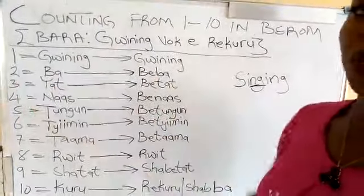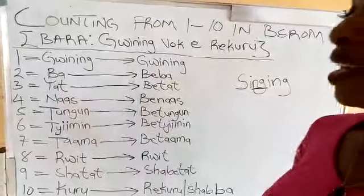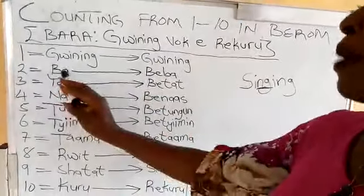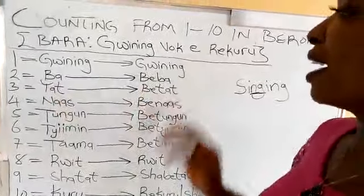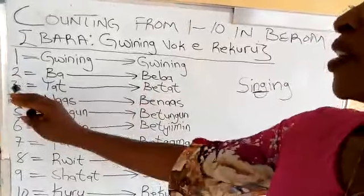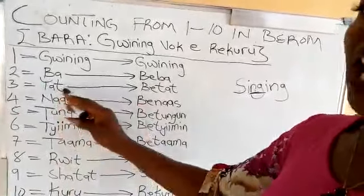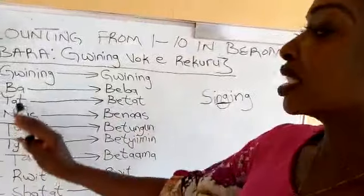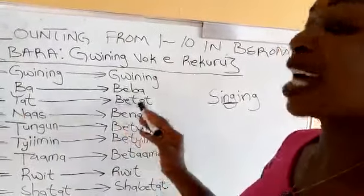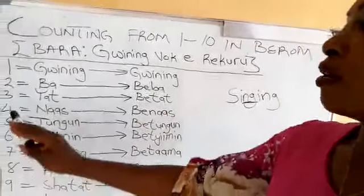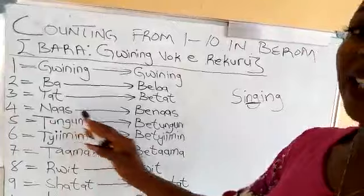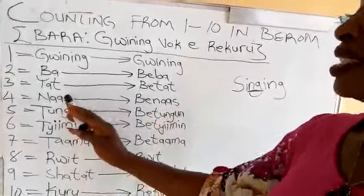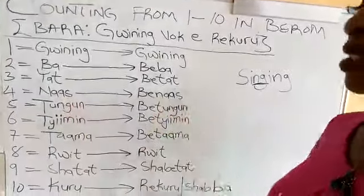2 is Ba or Biba. Ba or Biba. 3 is Tat or Bitat. Tat or Bitat. 4 is Nas or Binas. Nas or Binas.